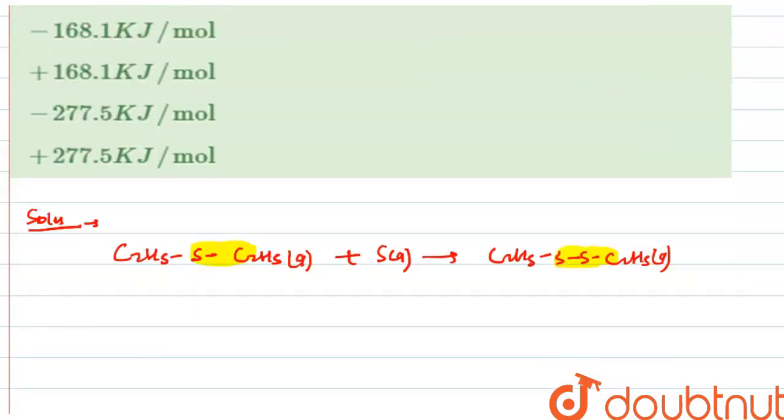One thing is common in LHS and RHS, which is product and reactant side, that here sulfur-carbon bond is breaking and here sulfur-carbon bond is forming. So it will cancel out. So delta H will be nothing but the enthalpy of sulfur-sulfur bond.